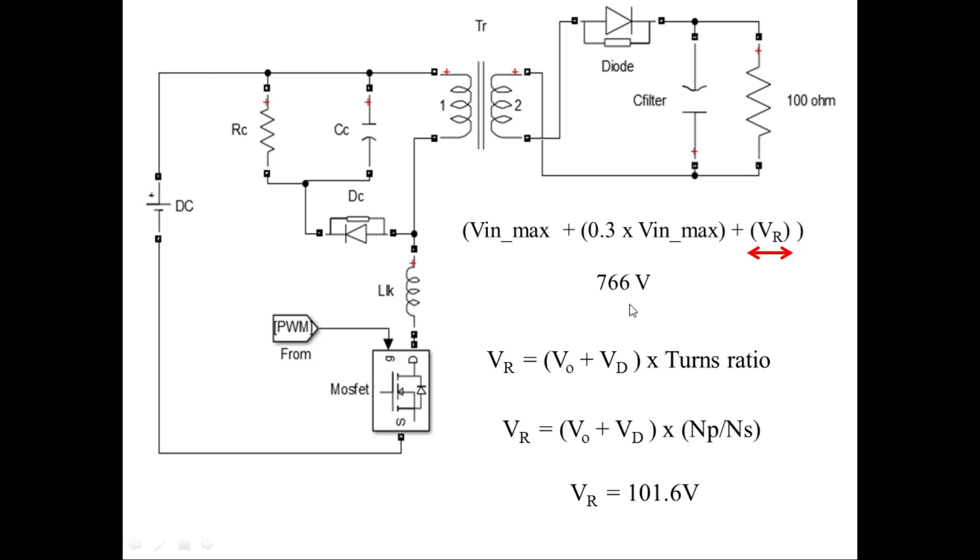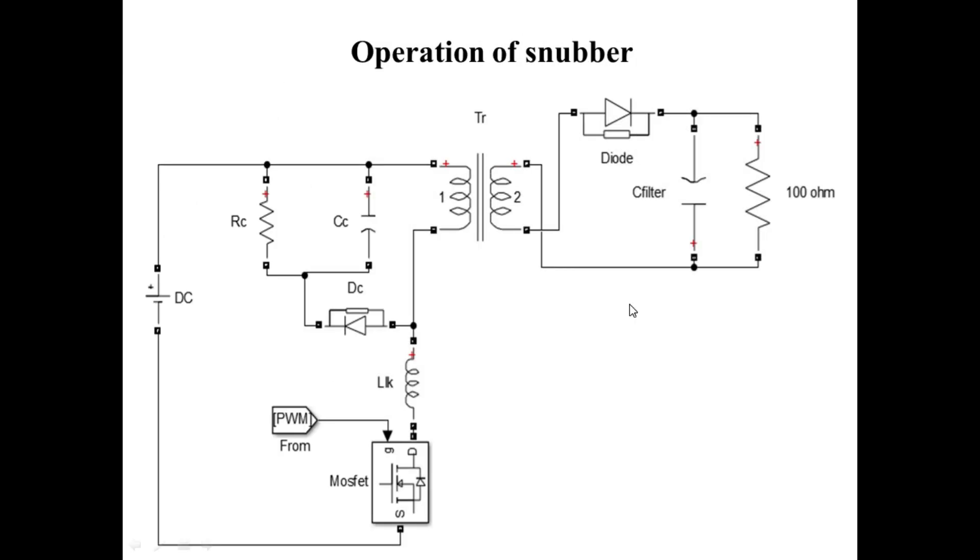Let us understand the operation of the snubber network. During turn-on time, the transformer's primary will be conducting and will store energy in its magnetic field. During turn-off time, the transformer's primary winding will release its energy into the capacitor via the diode. This energy will be dissipated by the resistor, and the diode will block the energy from going to the MOSFET, ensuring a safe level of voltage stress on the MOSFET.